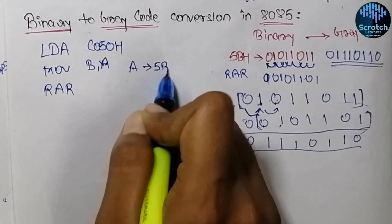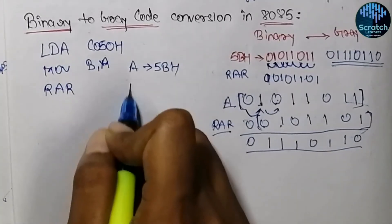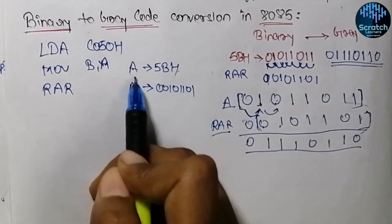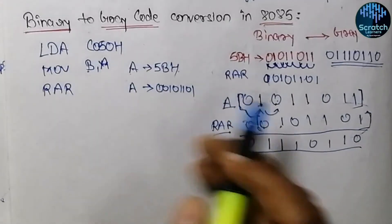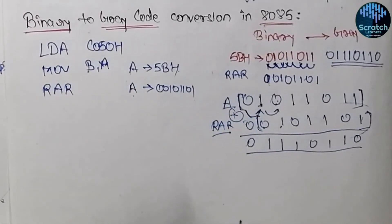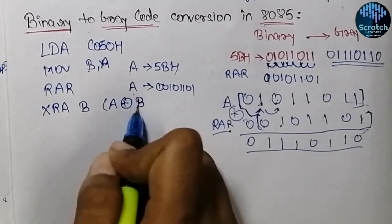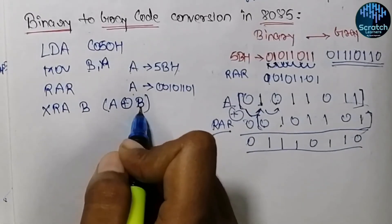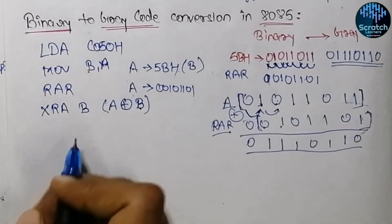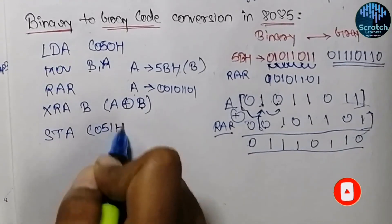The accumulator contains 5B hex, so we will perform the rotate-right instruction — RAR — on the accumulator with carry. Now the accumulator will contain 0 0 1 0 1 1 0 1. As we have the actual data in register B and the right-shifted data in the accumulator, the next step is to perform the XOR operation using the XRA instruction with register B, performing XOR between the accumulator and register B.